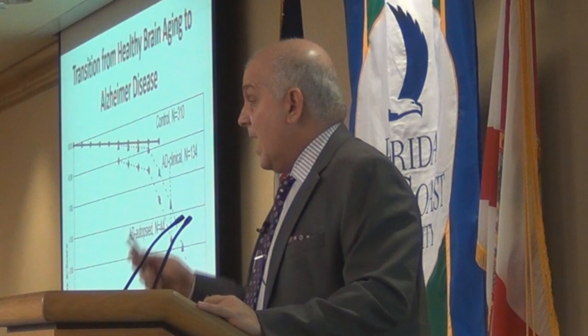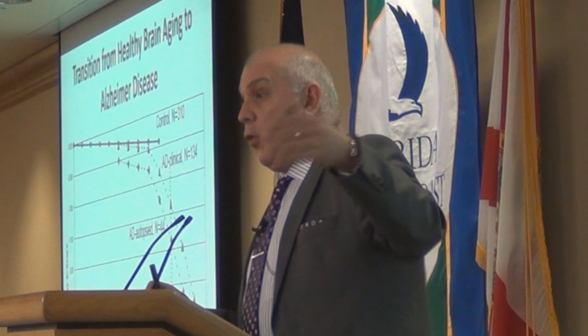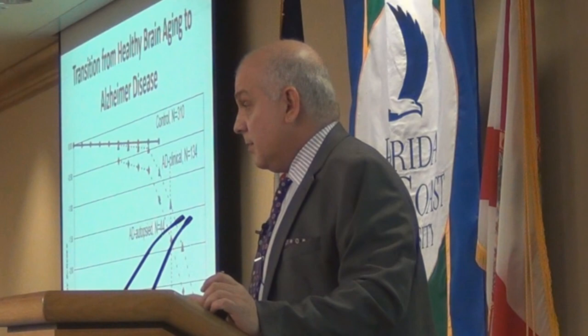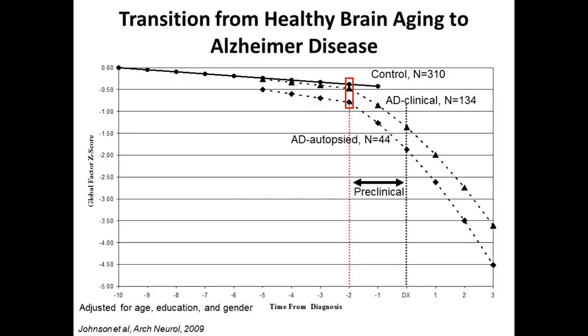Because we followed them for years before they had a problem, we have all the data before dementia, and then we followed them after they had dementia. The dotted line in the middle is when they were diagnosed with Alzheimer's disease. The top line represents our control individuals — people who were cognitively normal and never developed Alzheimer's disease. The dotted lines are the Alzheimer's group.